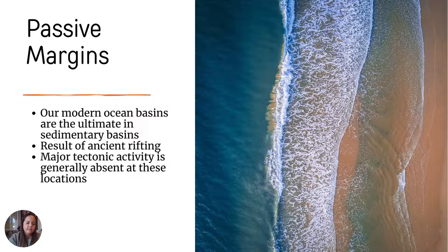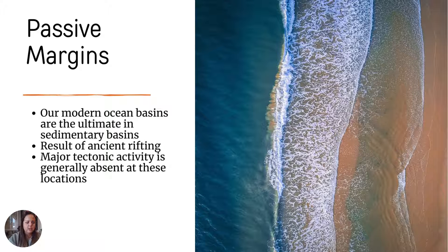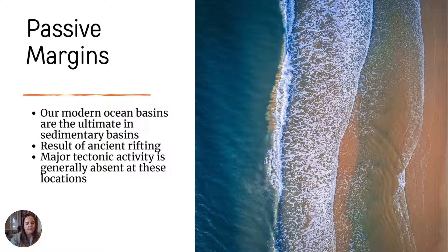We also have passive margins, where our modern ocean basins will ultimately be sedimentary basins as a result of ancient rifting. Major tectonic activity is generally absent at these locations. This is where we're looking at coastlines — it's really dependent on sea level rise and fall rather than tectonics.